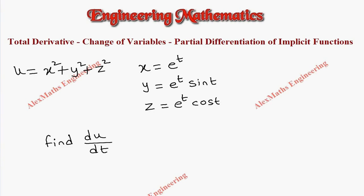Hi students, this is Alex here. In this video we are going to find du by dt, where u is x square plus y square plus z square, and x, y, z are in terms of t, where x is e power t, y is e power t sin t, and z is e power t cos t.